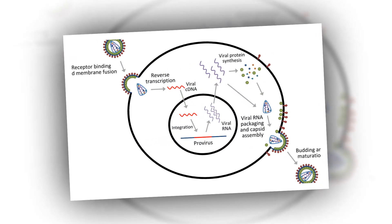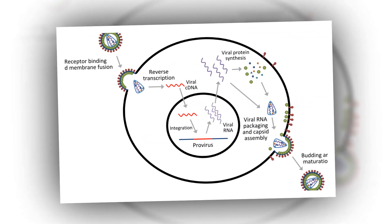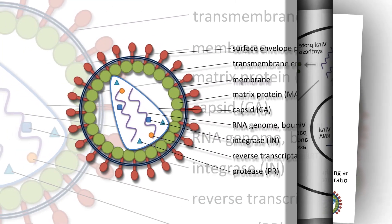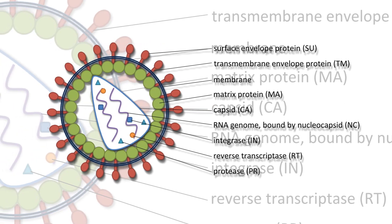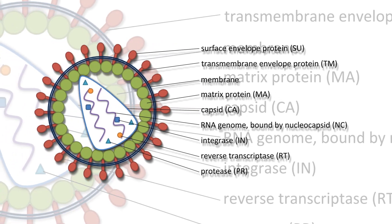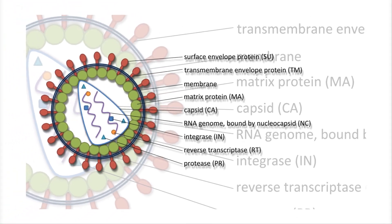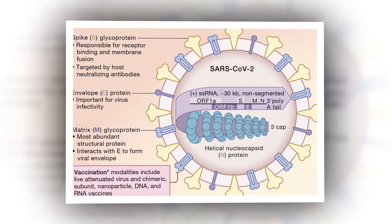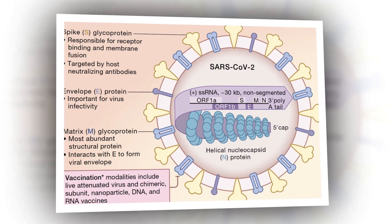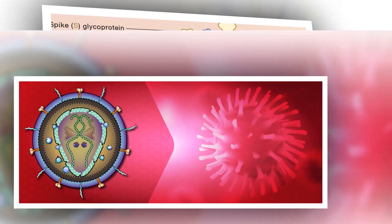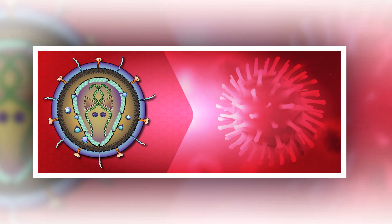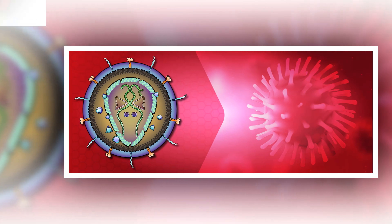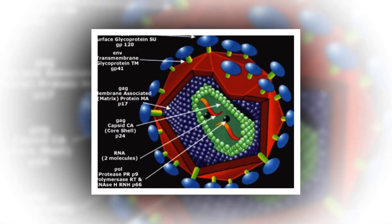SAMD9L was found to inhibit HIV1 infectious virus yield, while SAMD9 was found to enhance it. SAMD9L strongly restricted HIV1 transmitted/founder strains in a dose-dependent manner, independent of co-receptor use. SAMD9L also restricted HIV2, SIVamTAN1, and SIVmac, but did not affect MLV, MOPV, or VSV, indicating a specific antiviral effect on lentiviruses. SAMD9L significantly reduced Gag levels in viral supernatant.